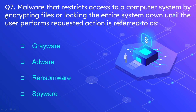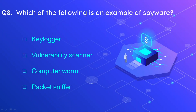Question number 7: A malware that restricts access to a computer system by encrypting files or locking the entire system down until the user performs a requested action is referred to as what? The options are grayware, adware, ransomware, and spyware. The correct option is ransomware. Question number 8: Which of the following is an example of spyware? The options are keylogger, vulnerability scanner, computer worm, and packet sniffer. The correct option is keylogger.